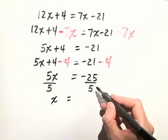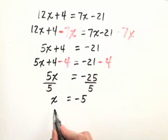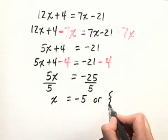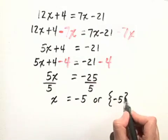A negative divided by a positive is a negative, and our answer will be x equals negative 5, or we can write the solution set as negative 5.